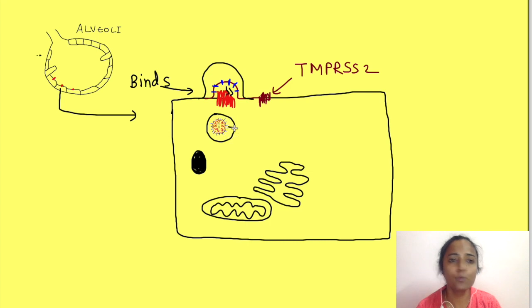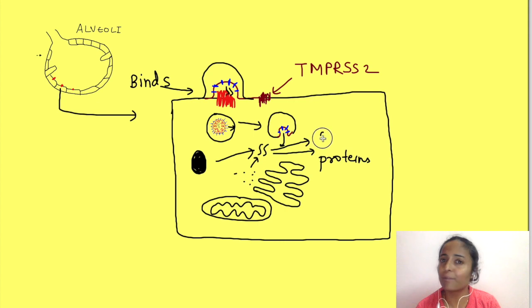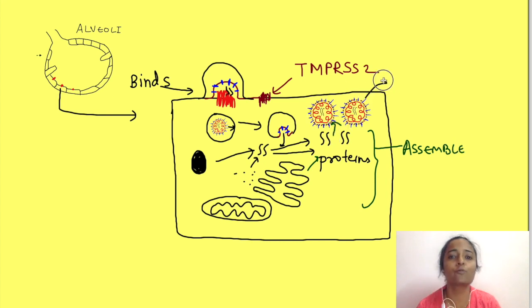Then the envelope fuses with the membrane of the endosome, releasing the RNA into the cytoplasm of the host cell. The virus uses host ribosomes and enzymes for translating RNA to proteins and for replication of its RNA. The newly synthesized RNA and proteins assemble in the Golgi apparatus, taking part of the membrane, and release from the cell.